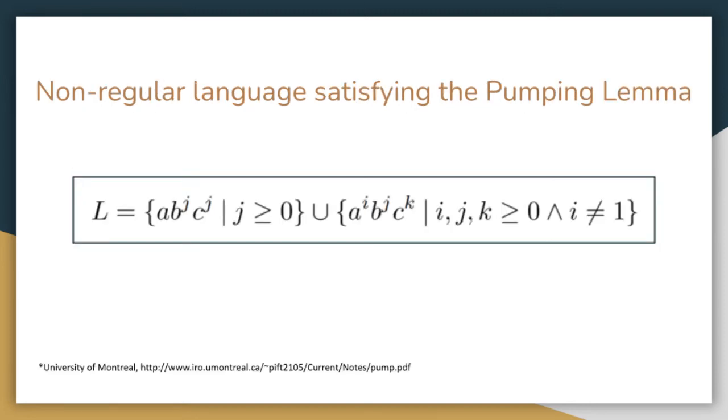Although both the pumping lemma and the Myhill-Nerode theorem are used to determine whether a language is regular, the main distinction between them is that there exist non-regular languages that satisfy the pumping lemma, whereas there does not exist a non-regular language that satisfies the Myhill-Nerode theorem.